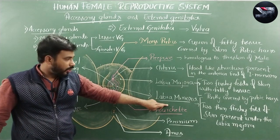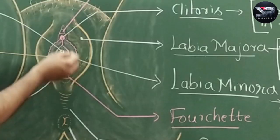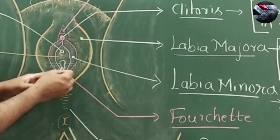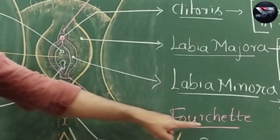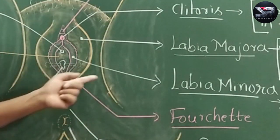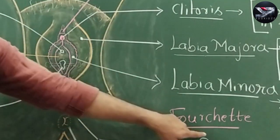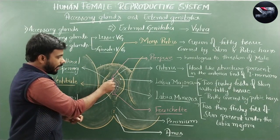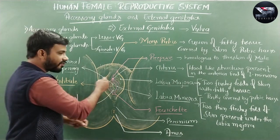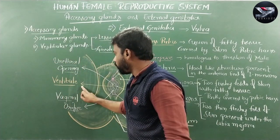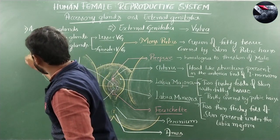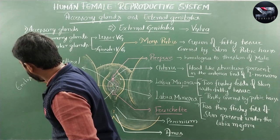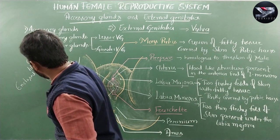At the posterior end, both labia minora fuse and produce a structure called the fourchette. The labia minora encloses a cleft called the vestibule, so the vestibule is the cleft-like structure enclosed by the labia minora.